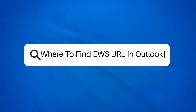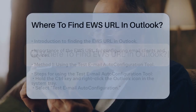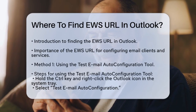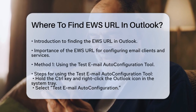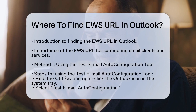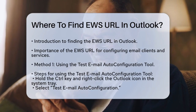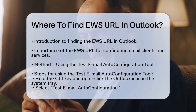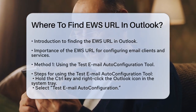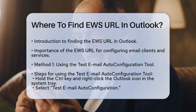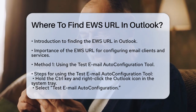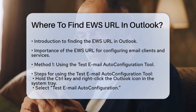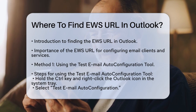If you're trying to figure out where to find the Exchange Web Services (EWS) URL in Outlook, you're in the right place. Let's break it down step by step. First, you need to understand that the EWS URL is essential for configuring certain email clients and services that interact with your Exchange server.